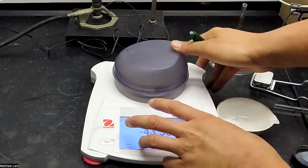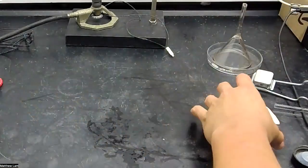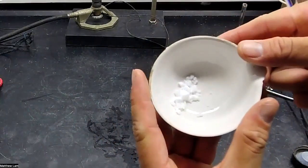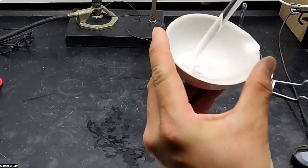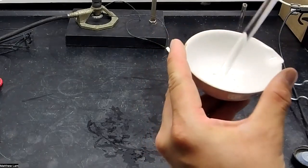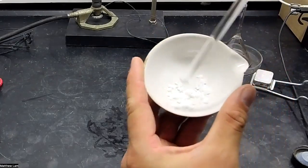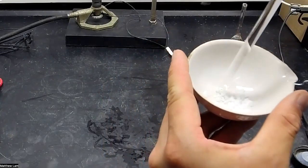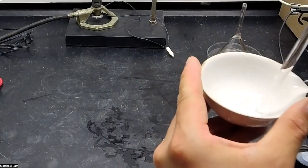And so before we even start the experiment, what I like to do and what makes it easier is I like to take this ammonium chloride because it looks kind of clumpy right now. I will take a glass stir rod and I'll kind of press it down a little and spread it out just so it's a little less clumpy.